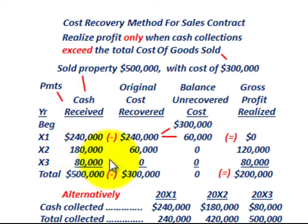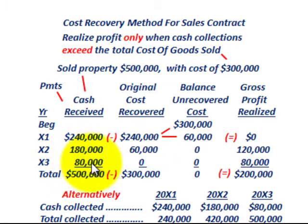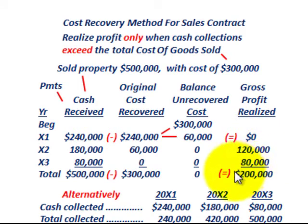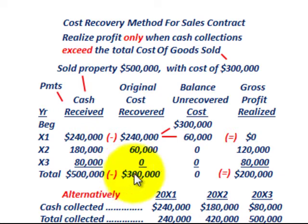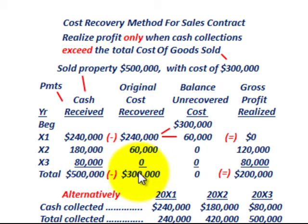For 20x3, we don't have any remaining balance in the unrecovered cost. So the total cash receipts of $80,000 are recognized entirely as realized gross profit of $80,000. Our total gross profit realized equals $200,000 — simply the difference between total cash receipts of $500,000 and our original cost of $300,000. So the property sold for $500,000 with a cost of $300,000 gives us $200,000 total gross profit realized at the end of the third year.